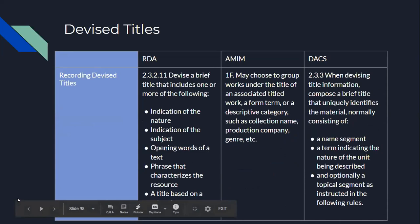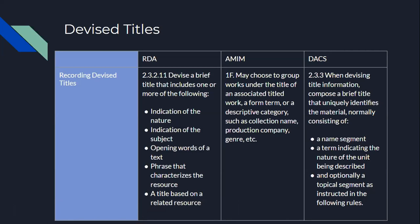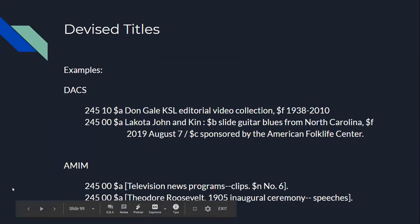If there's no formal title, we're going to devise a title. The formulation under AMIM for devising a title is very similar to DACS. Under RDA, it needs to indicate the nature and subject, could be opening words of a text. Examples for devised titles under DACS include a name element with a collection or type of material. Under AMIM, examples include 'Television news programs clips' or 'Theodore Roosevelt inaugural ceremony' with a date.